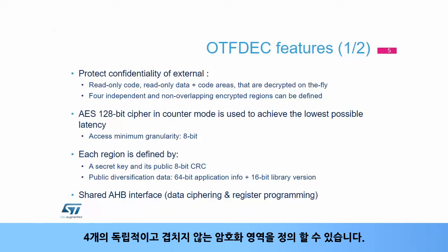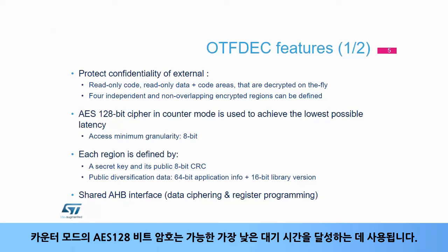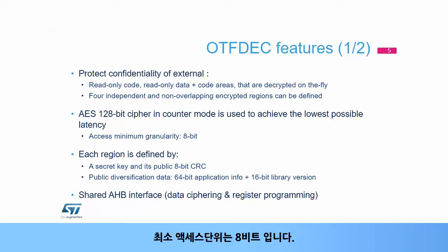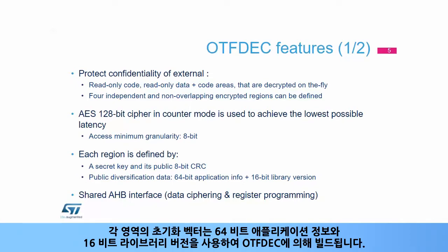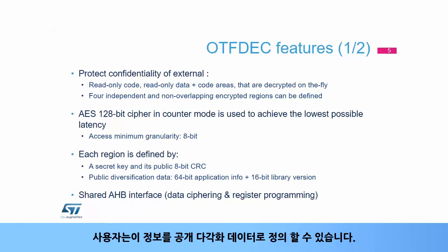Four independent and non-overlapping encrypted regions can be defined. The AES 128-bit cipher in counter mode is used to achieve the lowest possible latency. Access minimum granularity is 8 bits. Each region is defined by a 128-bit secret key and its public 8-bit CRC. The initialization vector of each region is built by OTF-DEC using a 64-bit application information and a 16-bit library version, which the user can define as public diversification data.